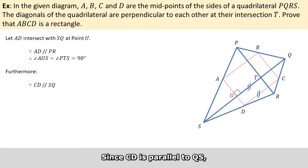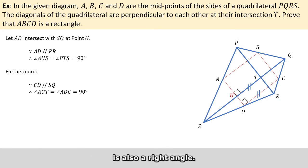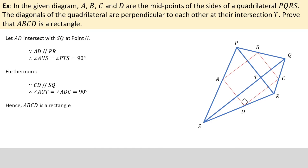Since CD is parallel to QS, the angle ADC, which is in parallelogram ABCD, is also a right angle. Therefore, we have proved that ABCD is indeed a rectangle.